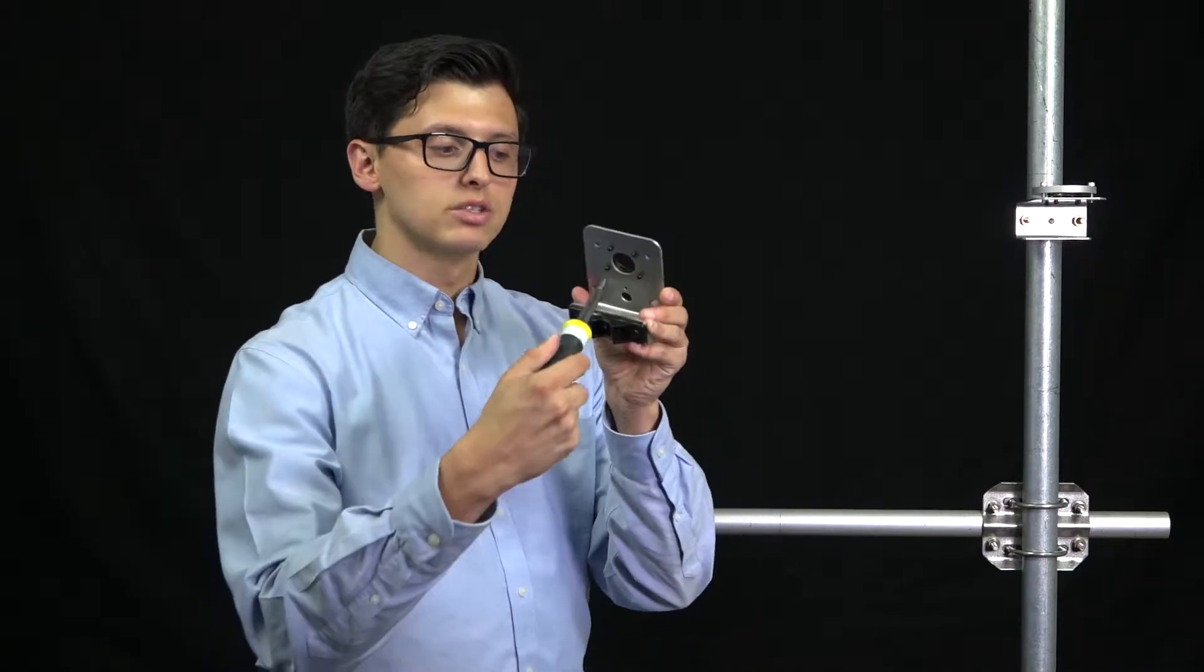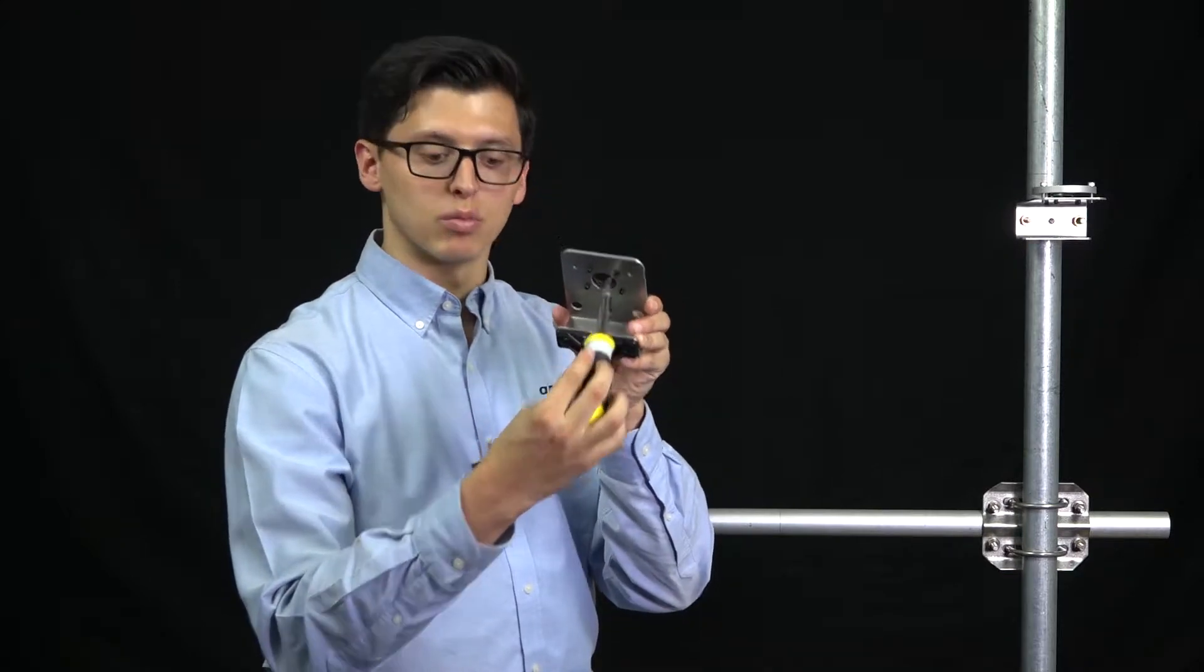However, if you need to remove your sensor for calibration or any other purpose, you can always do so by unscrewing the black nylon screw through the bottom of your bracket.